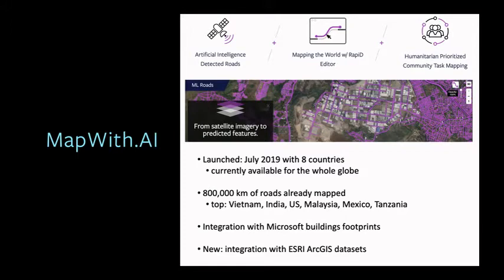For the last year, we went through a lot of improvements. First of all, we started with eight countries, and right now we cover the whole globe. If you go to the Map with AI site and RapiD, you will see roads suggested for the whole globe. Thousands of people have tried it. We have more than 800,000 kilometers mapped, and I think it's hundreds of thousands of different changesets committed to OSM with RapiD.